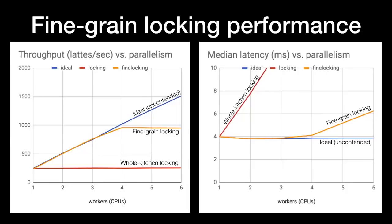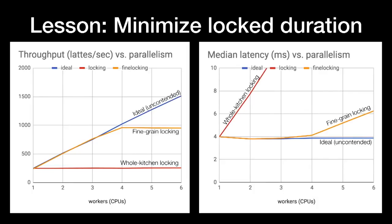Now our throughput and latency curves look more interesting as we add CPUs. Up to 4 CPUs, throughput grows linearly and latency stays flat, just like in our ideal implementation. But with the 5th and 6th CPUs, throughput stays flat and latency starts increasing, somewhat like our whole-kitchen locking scenario. When there are just 3 people in the kitchen, each takes their turn at the machine and moves on. Beyond 3, each additional person needs to wait their turn because all the machines are in use.